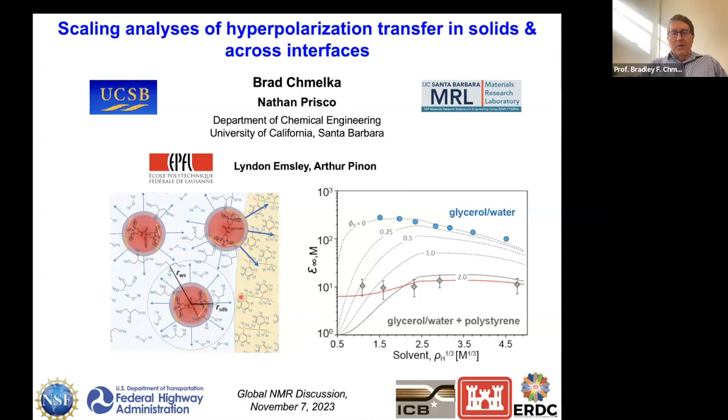What's satisfying about this from a chemical engineering point of view is that the applied mathematics are easy to understand once you see that the physical processes have analogies to things in thermodynamics. It leads to analytical solutions of how polarization transfer occurs and what the rate-limiting steps are, so we can use these insights to design an experiment for a given formulation and material.